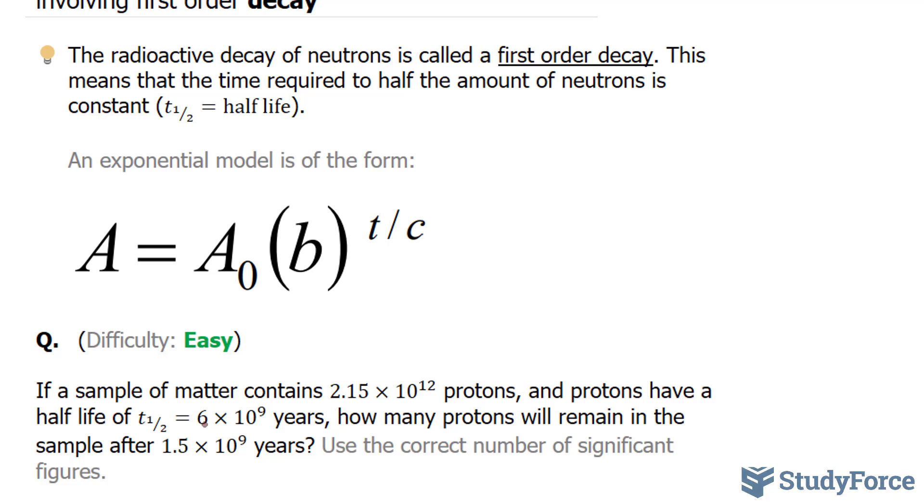So let's write that down. A is what we're looking for, so I'll put a question mark right there. Our initial amount contains 2.15 times 10 to the power of 12. T represents 1.5 times 10 to the power of 9. And C represents 6 times 10 to the power of 9.